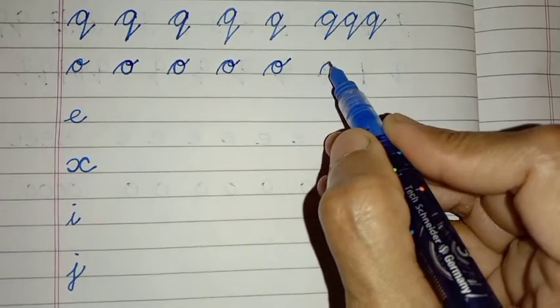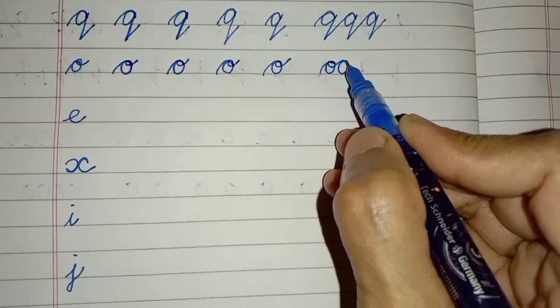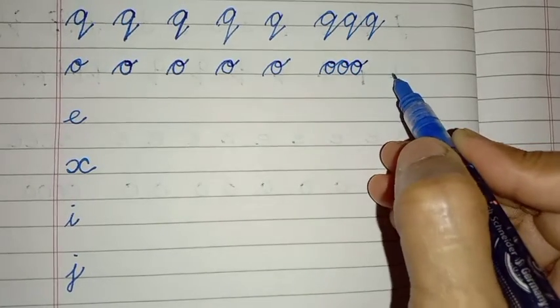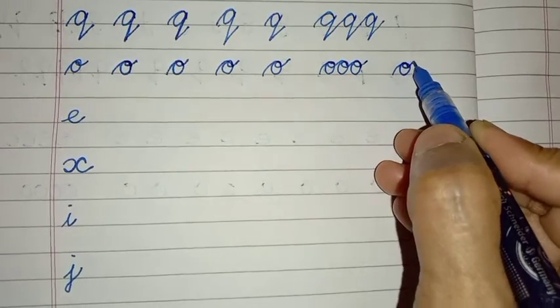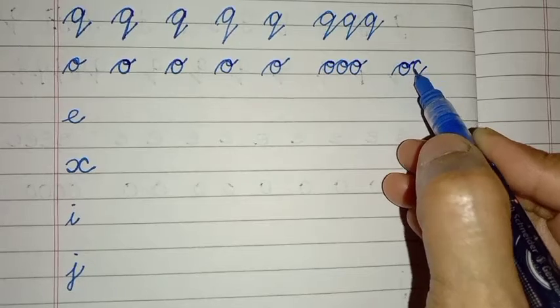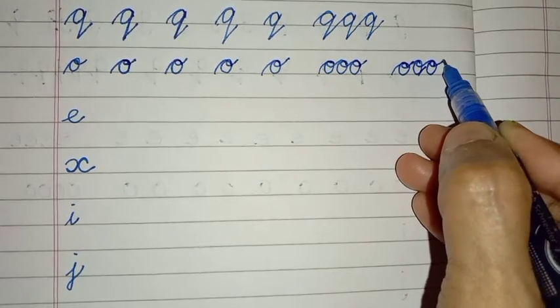Now let us join these O's like this, like this and like this. Make a C, turn it like this. Then again make a C and turn it like this. Again make a C and turn it like this.